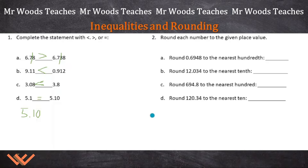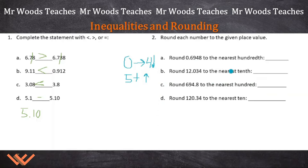Let's look at number 2 with rounding. A quick review: if it's 0 to 4, you're going to round down. If it's 5 through 9, you're going to round up. Round each number to the given place value. Round 0.6948 to the nearest hundredth. Where's the hundredth? Right here — we have tenths and hundredths. We look to the number immediately to the right, which is 4.